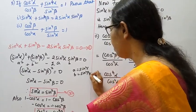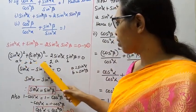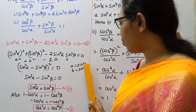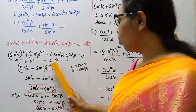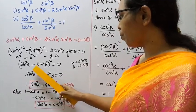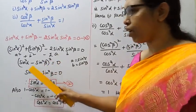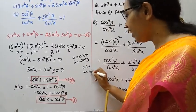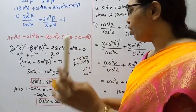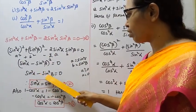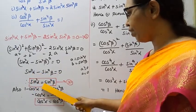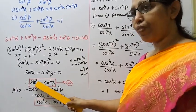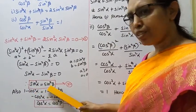Using a squared plus b squared minus 2ab equals a minus b the whole squared: sin squared alpha minus sin squared beta the whole squared equal to 0. Therefore a squared equal to 0 means a equal to 0, so sin squared alpha minus sin square beta equal to 0, giving sin square alpha equal to sin square beta.